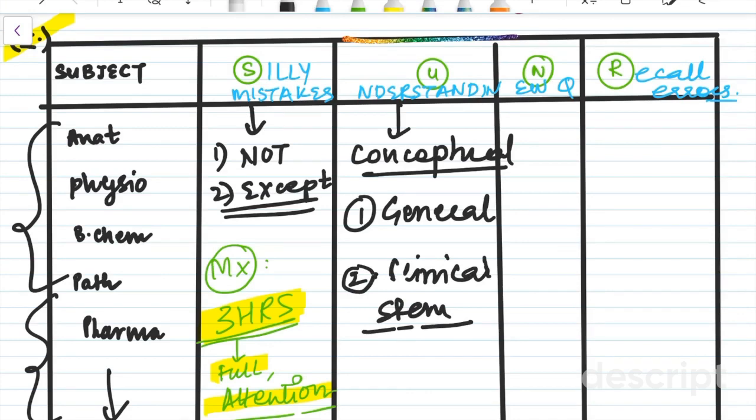So basically, you're not able to apply understanding or application errors are when you've read a piece of information, but you're not able to apply it to the particular MCQ.